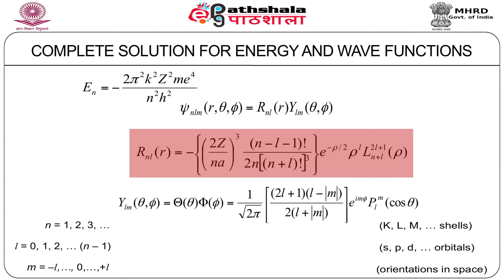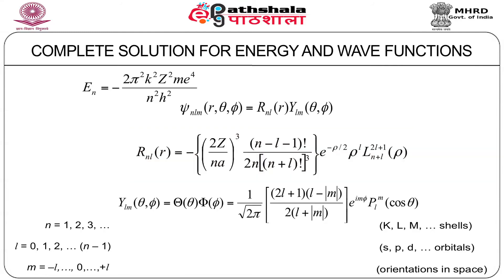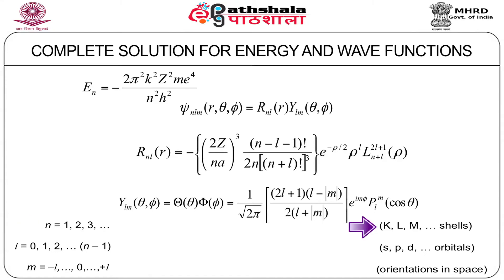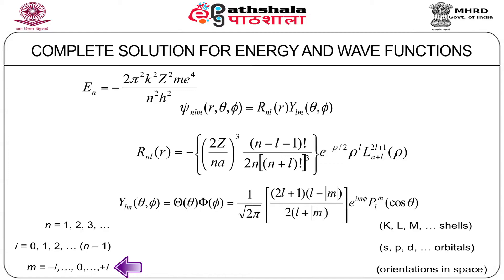The summary of the complete solution for energy and wave functions shows that the energy levels are given by the same expression as obtained from the Bohr model, and the total wave function is the product of the radial part and the angular parts. The quantum numbers are: n = 1, 2, 3, ... referring to K, L, and M shells; L = 0, 1, 2, ... up to n−1, referring to S, P, D, and so on orbitals; and M, the magnetic quantum number, having 2L+1 values referring to orientations in space.